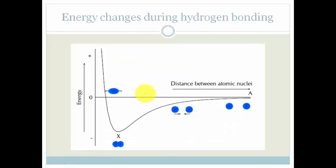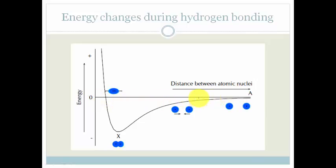Let's look at a graph which shows the energy changes during hydrogen bonding. What you need to understand is what's going on here. This is a graph of the distance between the atomic nuclei. At this point here, the atoms are very far apart, and as we get closer and closer to the origin, the atoms get closer and closer to each other. At this point in time the atoms are very far apart, and through gravity and everything else they start moving slightly closer towards each other.